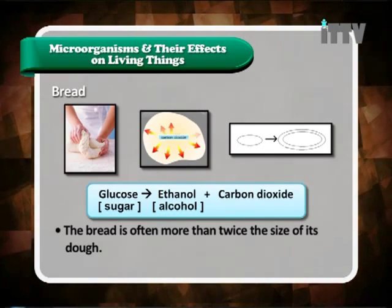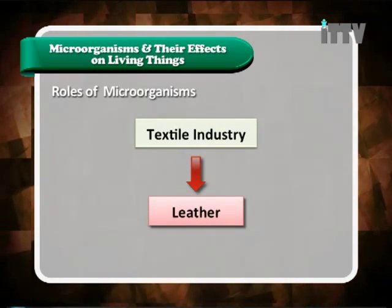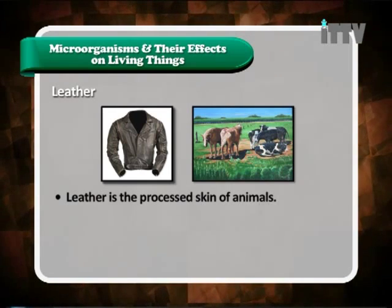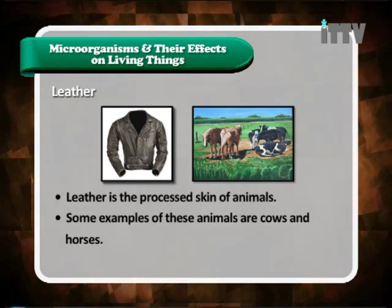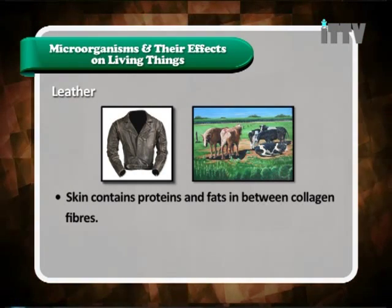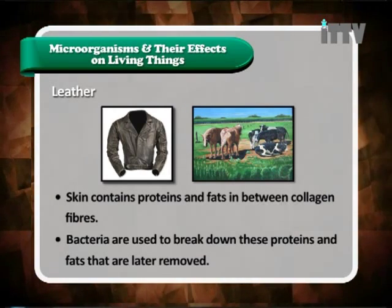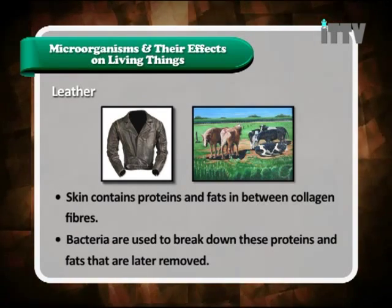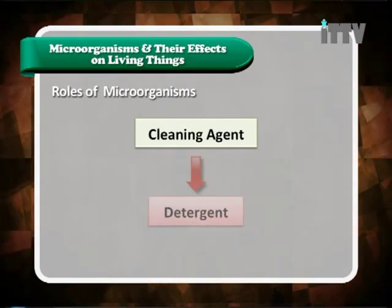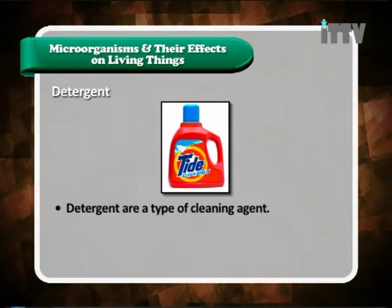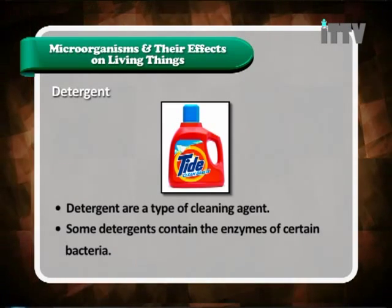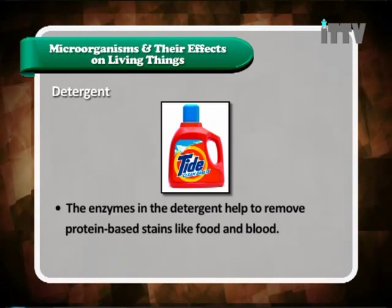Roles of microorganisms in the textile industry: leather is a processed skin of animals such as cows and horses. Skin contains protein and fats between collagen fibers. Bacteria are used to break down these proteins and fats, which are later removed. For cleaning agents, some detergents contain the enzymes of certain bacteria. These enzymes help to remove protein-based stains like food and blood.